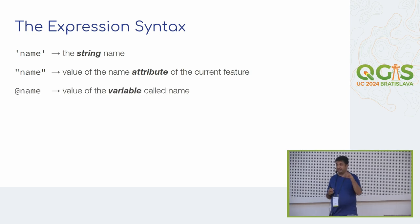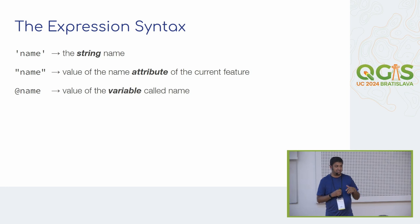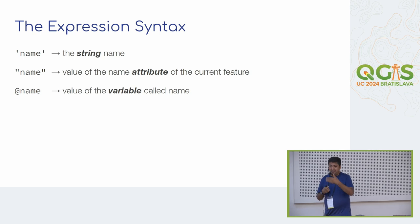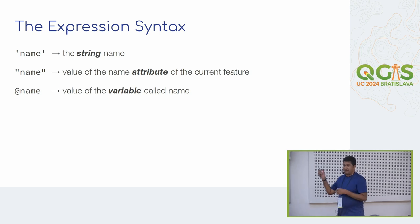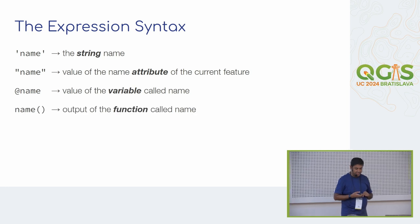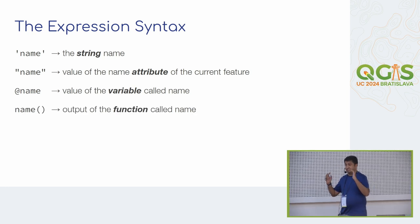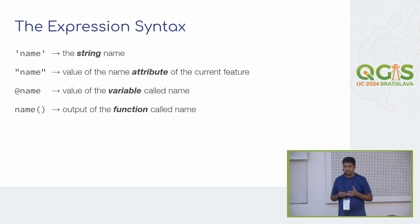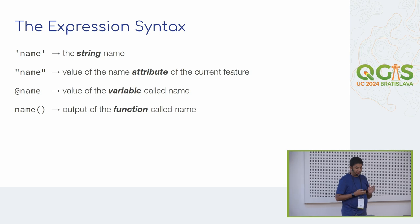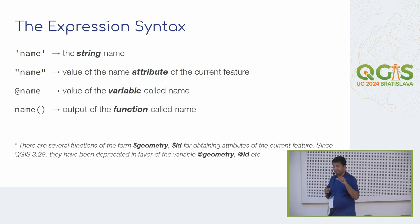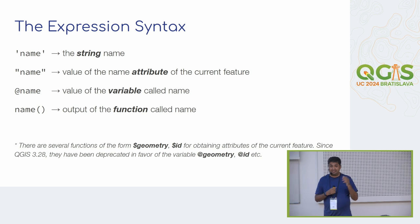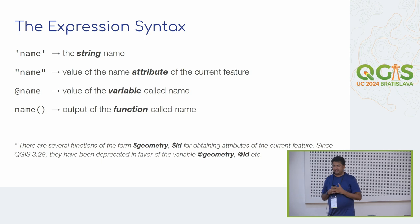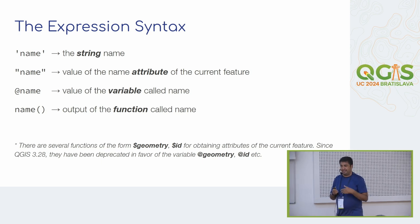If you start anything with an @ symbol, that is a variable — typically referring to the current feature's geometry or current feature, or variables which can change values. If you put an @, that's interpreted as a variable. Functions are called using parentheses. Longtime QGIS users will remember functions with the dollar symbol — those have been recently deprecated, with equivalents using the @ syntax, such as @geometry, @id, and so on.